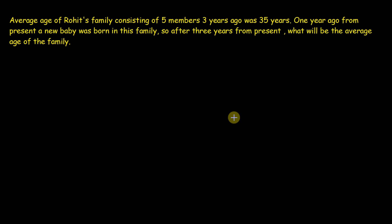Now we see a question. Average age of Rohit's family consisting of 5 members 3 years ago was 35 years. One year ago from present a new baby was born in this family. So after 3 years from present what will be the average age of the family?